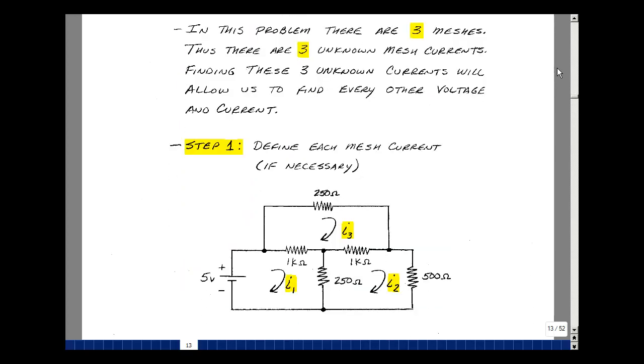The first step is to find a mesh current if you need to. In this case, none of them was specified, so I'll call this current I1, I2, and I3. You could call this I1 if you wanted to, but once you pick it, just stay with it.